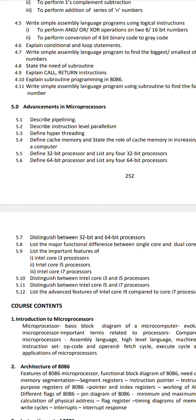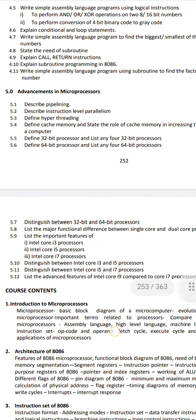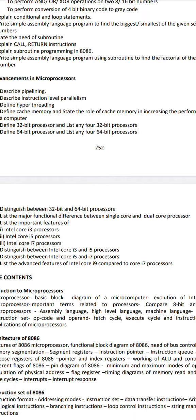Define hyper-threading, second important question. Difference between multiprocessor and multicore processor - important question. Difference between Intel Core i3 and i5, and advanced features of i7 compared to i9. Difference between i3 and i7. These are the important questions. Thank you so much.